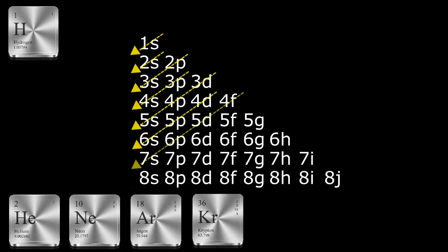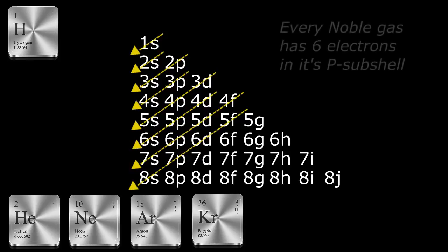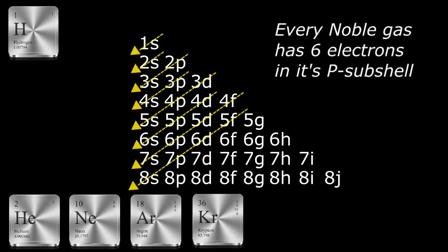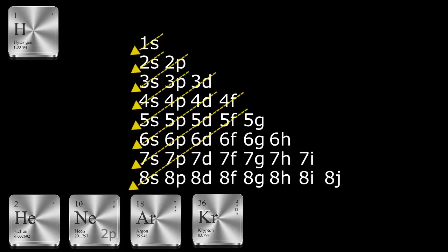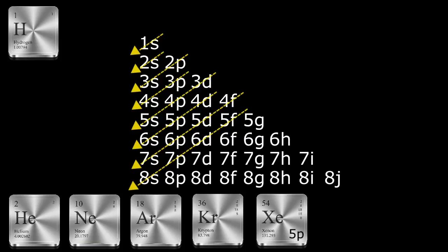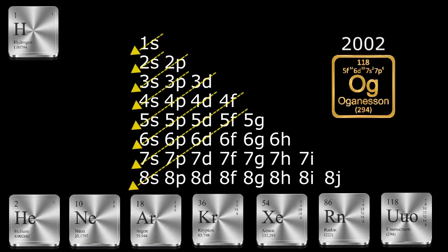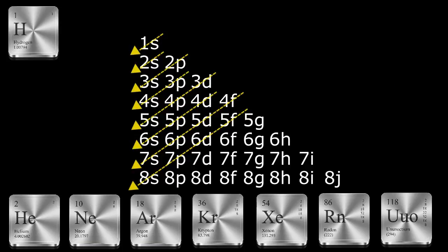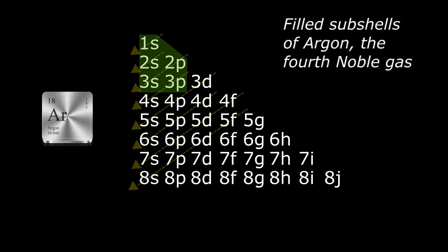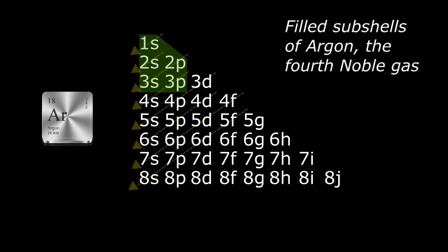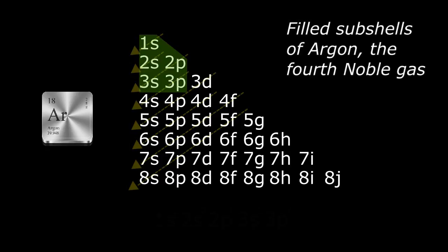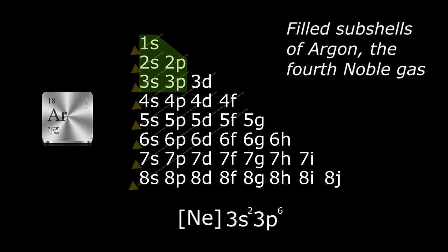Now you can see the diagonal pattern that gives the table its name. A full complement of six electrons in the P shell determines each of the noble gases on the rows of the periodic table below row 1: neon completely fills 2P, argon 3P, krypton 4P, xenon 5P, radon 6P, and oganesson 7P. The first shell doesn't have a P shell, so helium simply fills its lone S shell but is still a noble gas with all its available orbitals filled. Looking at our diagonal table, all the other subshells before the P subshell will be completely full as well.